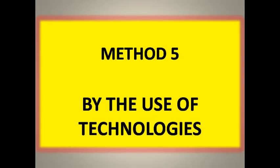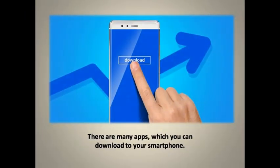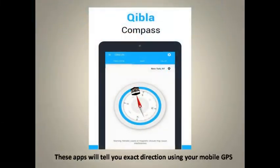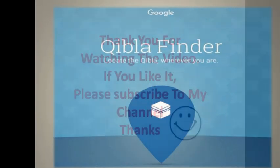And lastly, by the use of technology. There are many apps which you can download to your smartphone — these apps will tell you the exact direction using your mobile GPS. The most efficient and trusted method is to go to the internet, where there are many websites which tell you the exact location using satellite maps.